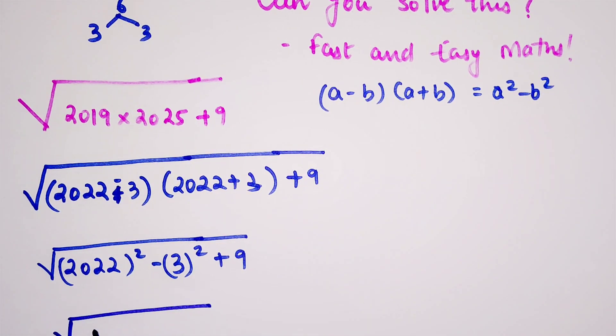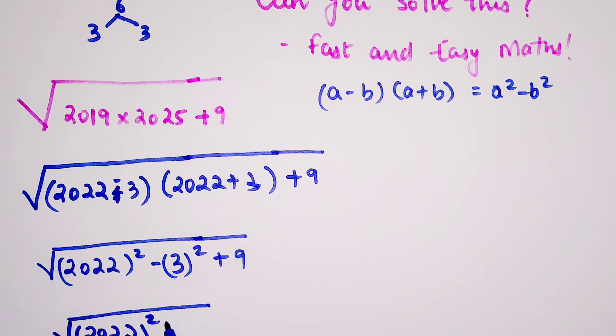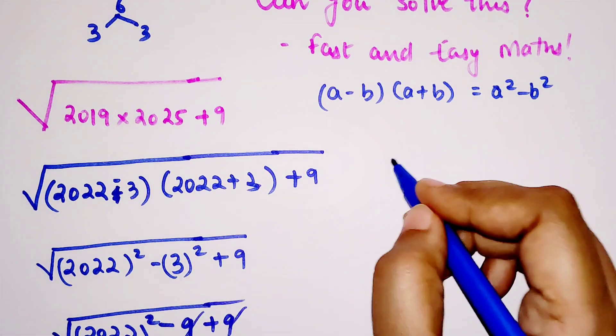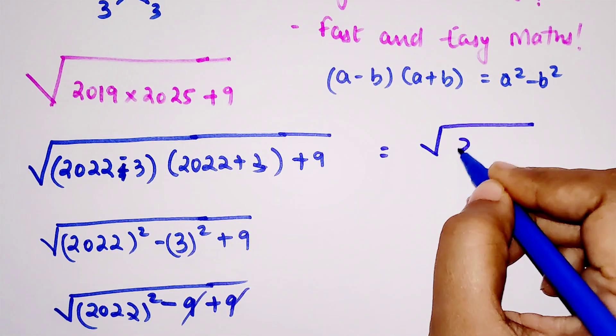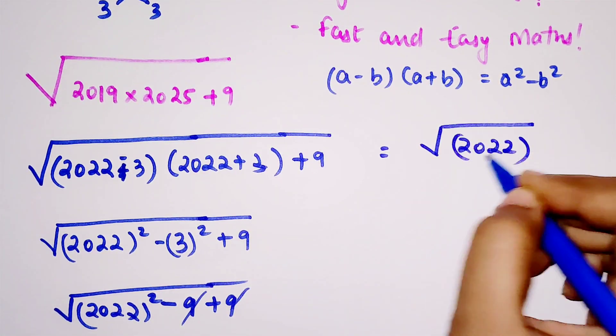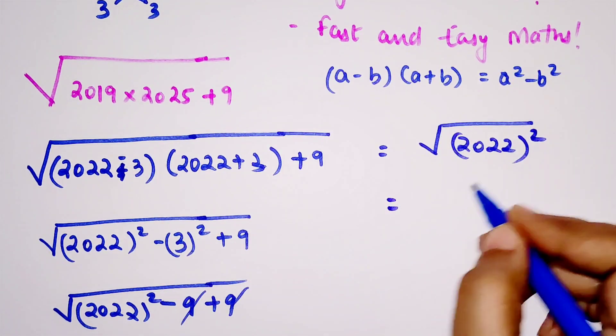This would be 2022² minus 3², which is nine, plus nine. So minus nine plus nine cancel each other, and we're just left with √(2022²).